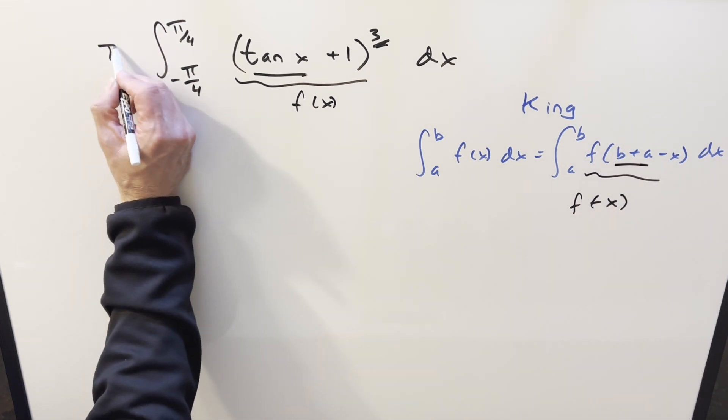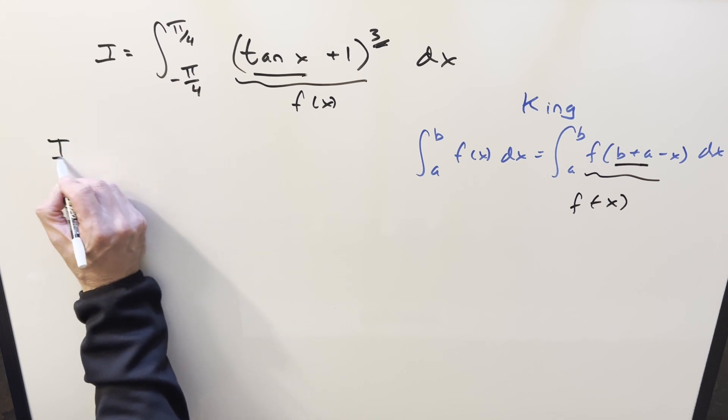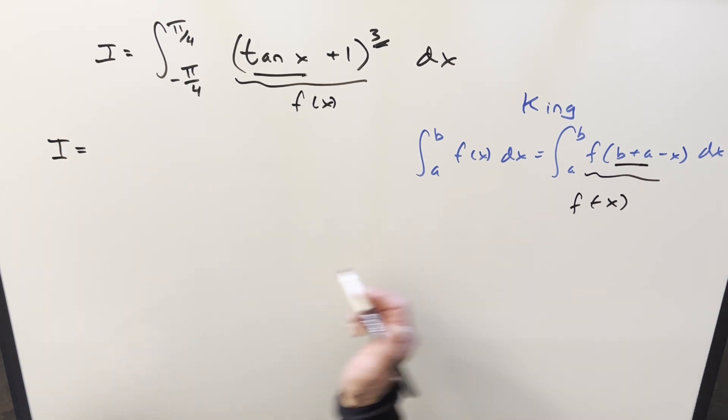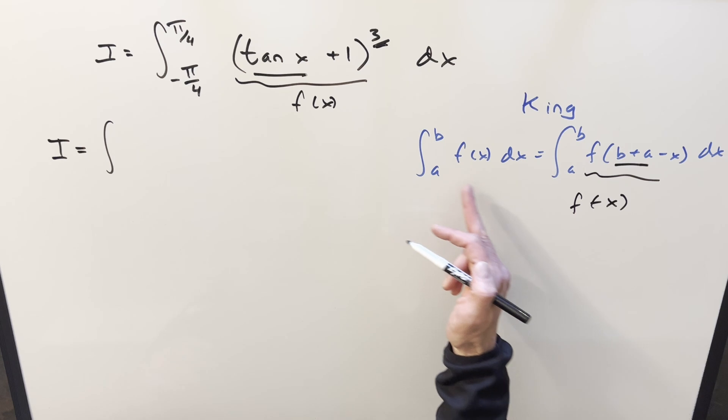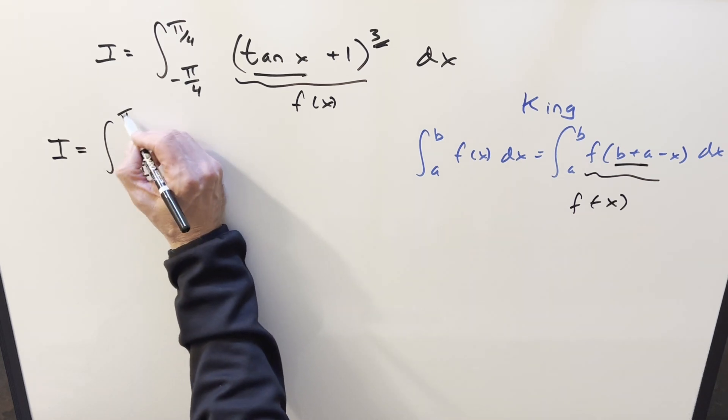So this right here, b plus a minus x, this is just going to be f of minus x. So we'll put a label on the original integral. We'll transform it using this, so this thing is also going to be I. When we do this using the formula, what happens is the bounds stay the same, so we're still going minus pi over 4 to pi over 4.